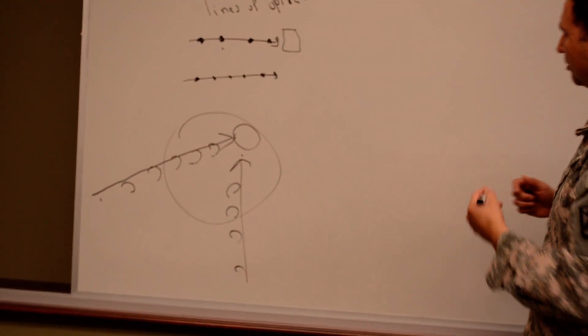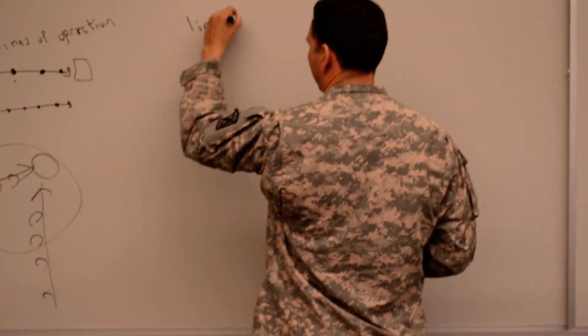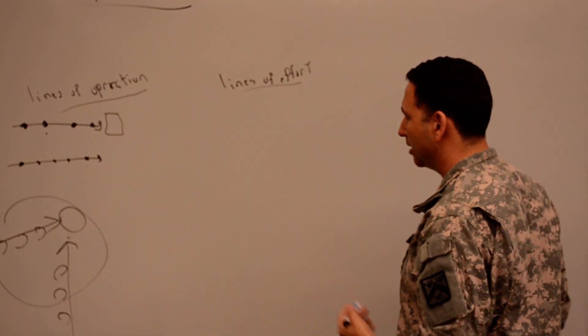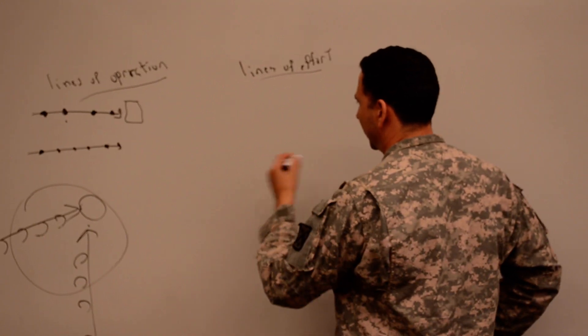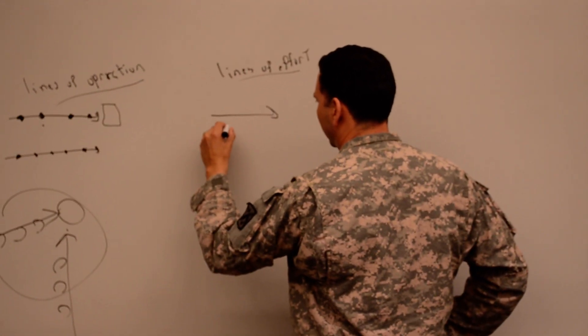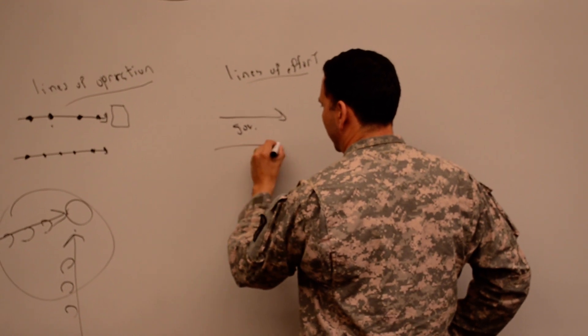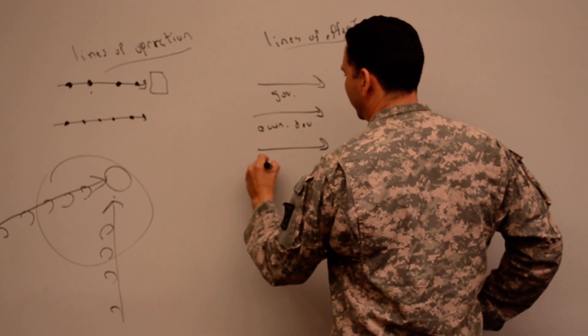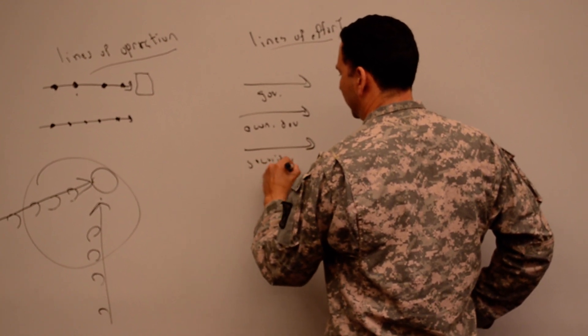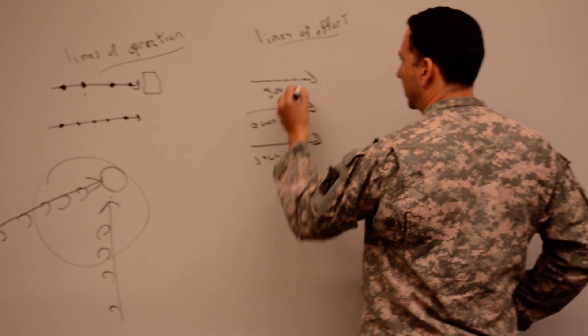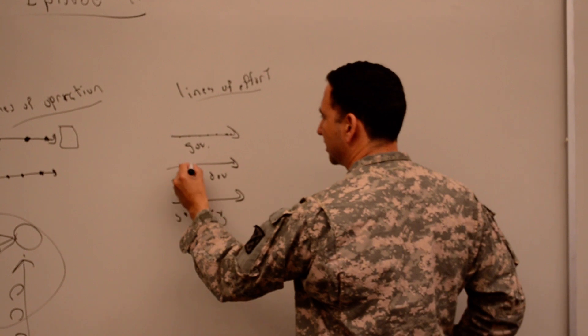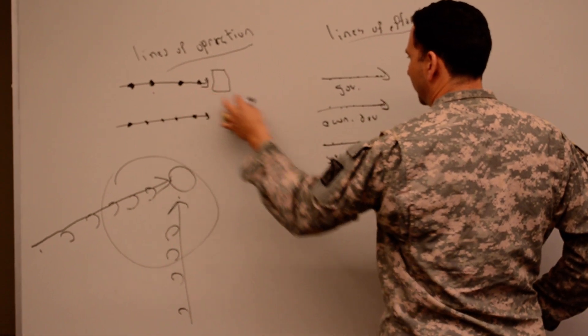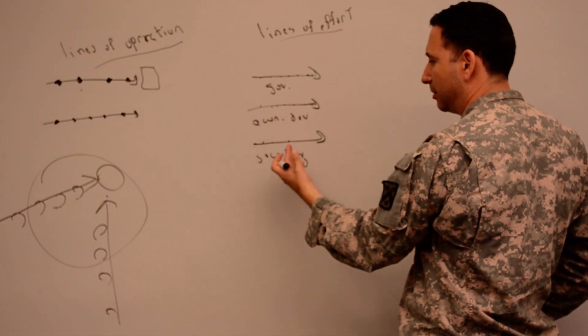But the Joint Doctrine also says that we can use lines of effort. And with lines of effort, they're conceptual in nature. So one of the common ones we've seen in both Iraq and Afghanistan at different levels is we'll have a line of effort entitled Governance. Another one is something like economic development. And another one, security operations. These are conceptual in nature and each of these has certain objectives or at the more tactical level tasks.